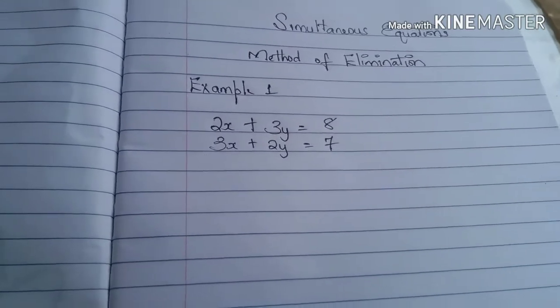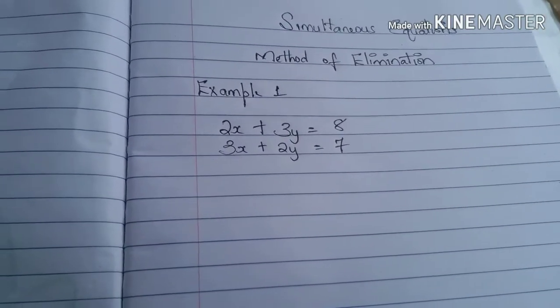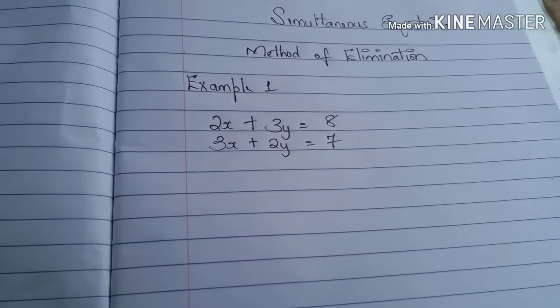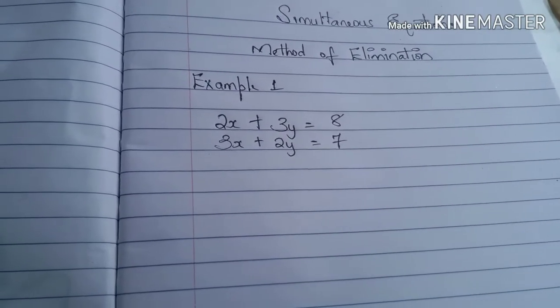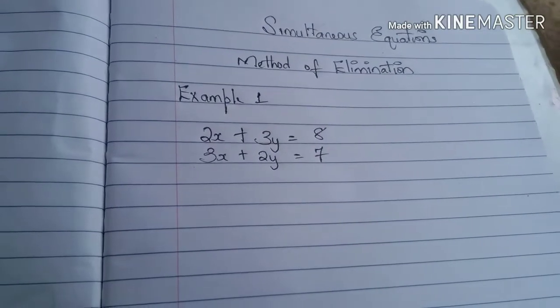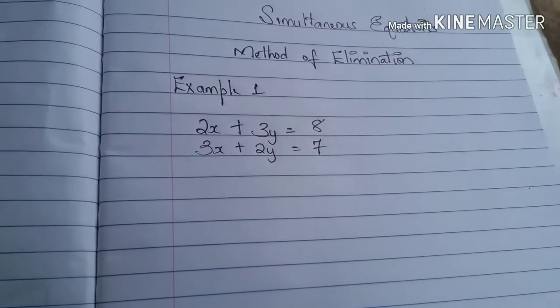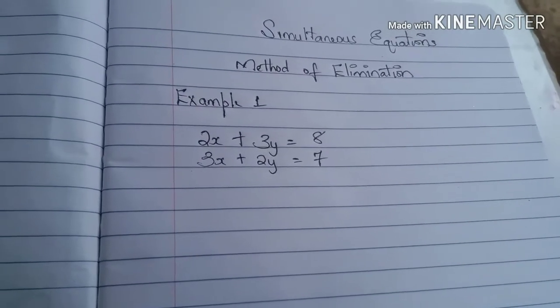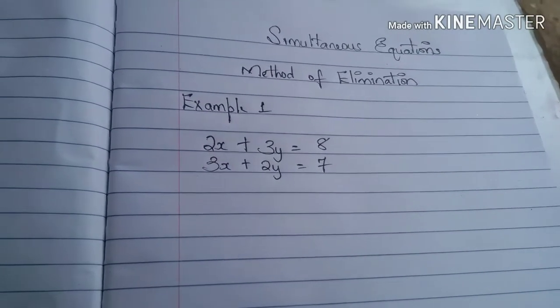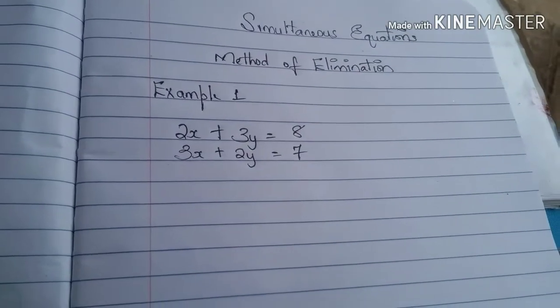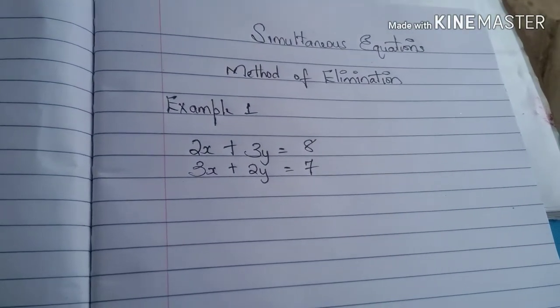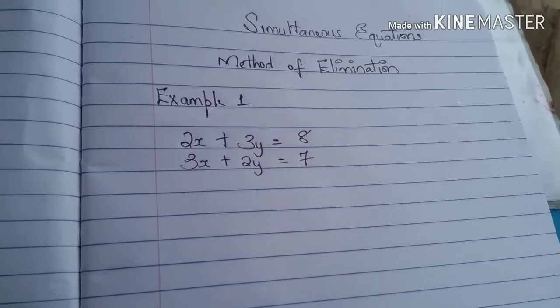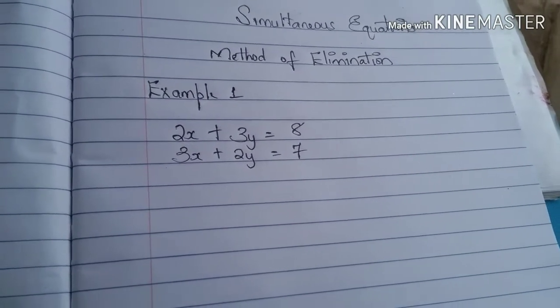Hello! Alright, so in this video we'll be looking at simultaneous equations and we'll be using the method of elimination. In our example, we were given two equations and once it's a simultaneous equation, we are solving both equations at once. So we were given 2x plus 3y is equal to 8 and 3x plus 2y is equal to 7.